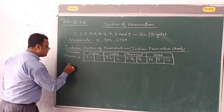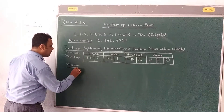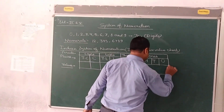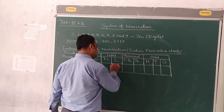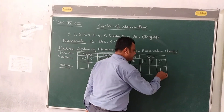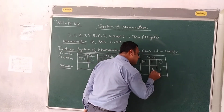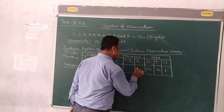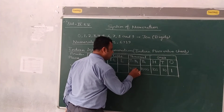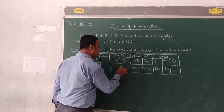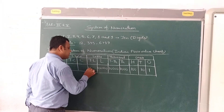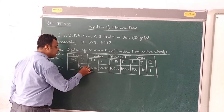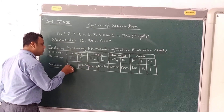Now let's know the place values. Ones means 1. Tens means 10. Hundreds means 100. Thousands means 1,000. Ten thousands means 10,000. Lakh means 1,00,000. Ten lakh means 10,00,000. Crore means 1,00,00,000. And ten crore means 10,00,00,000.